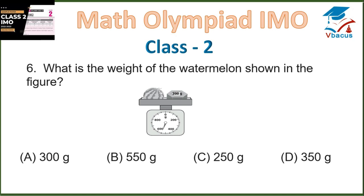Question 6: What is the weight of the watermelon shown in the figure? The weight kept on the scale is 200 grams and the reading shows 550. So the total weight is 550. If we subtract the weight of the 200g weight, we get 350. That is option D, so option D is correct.